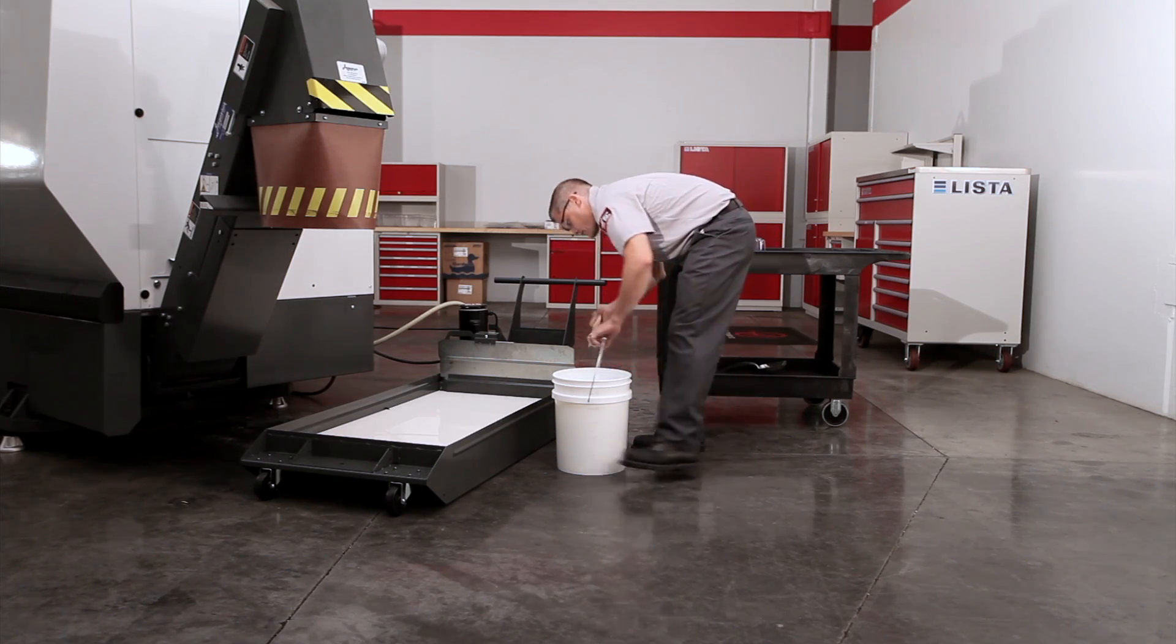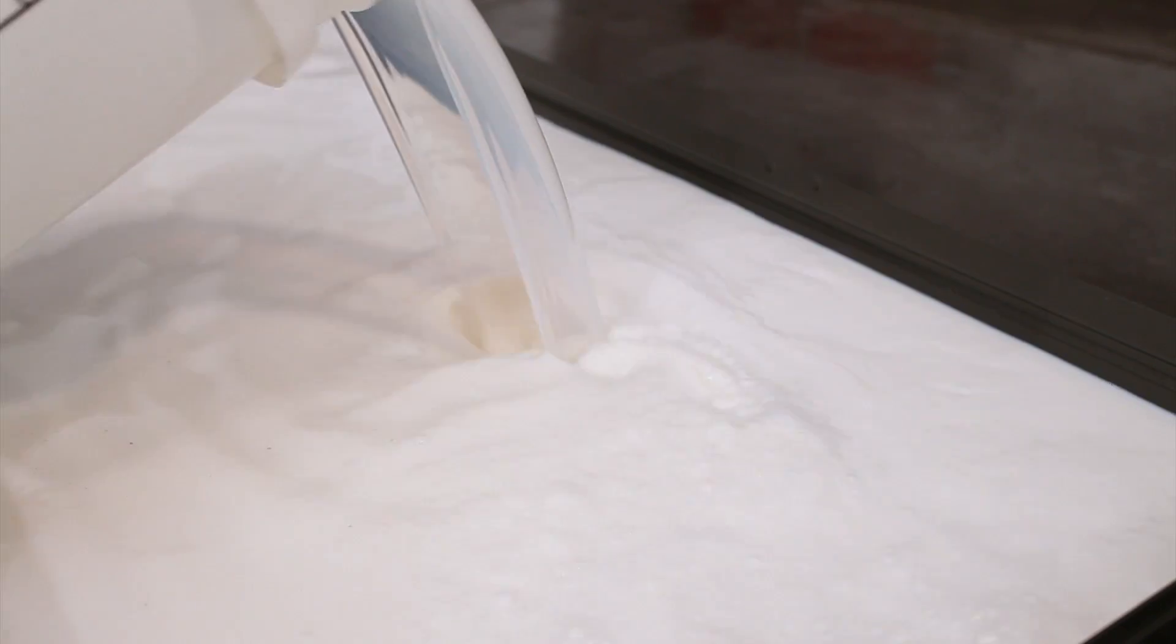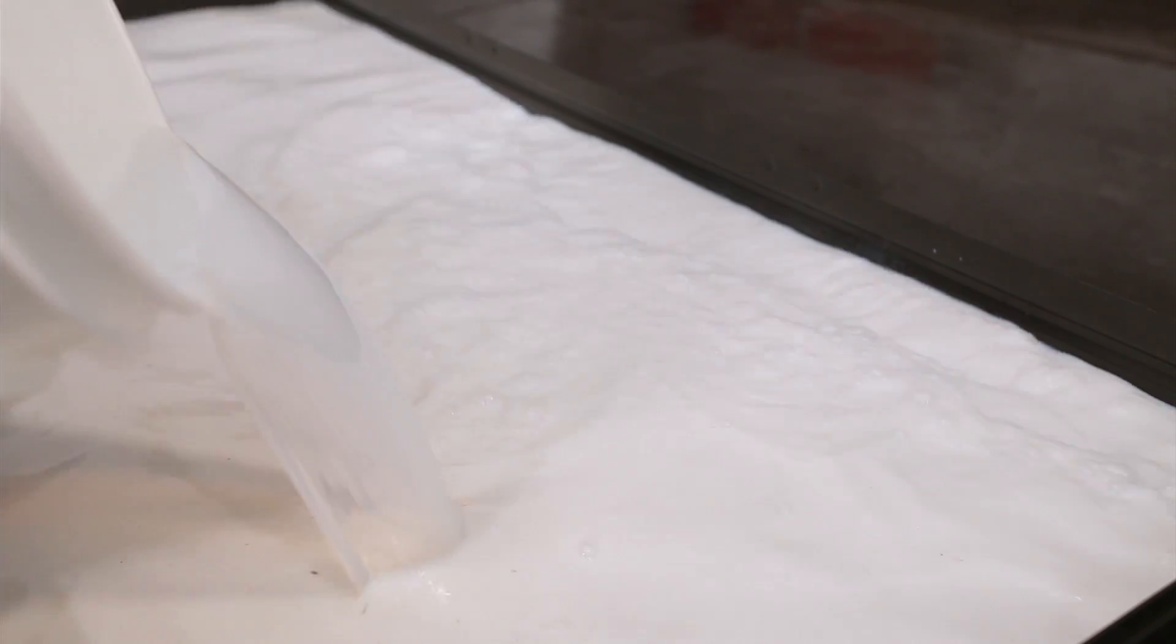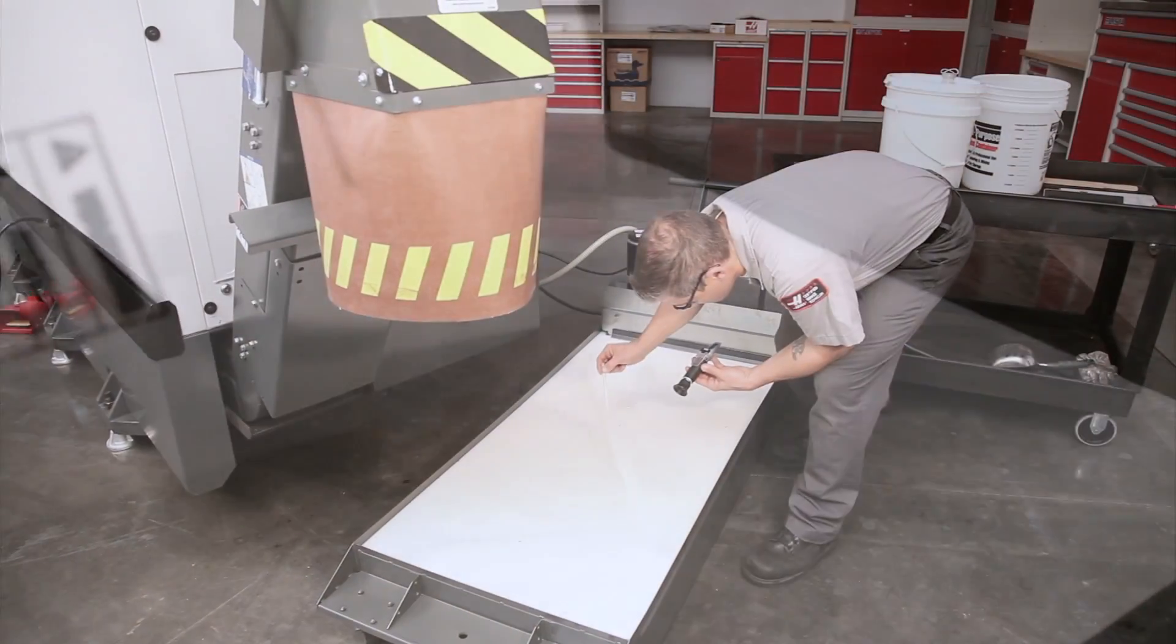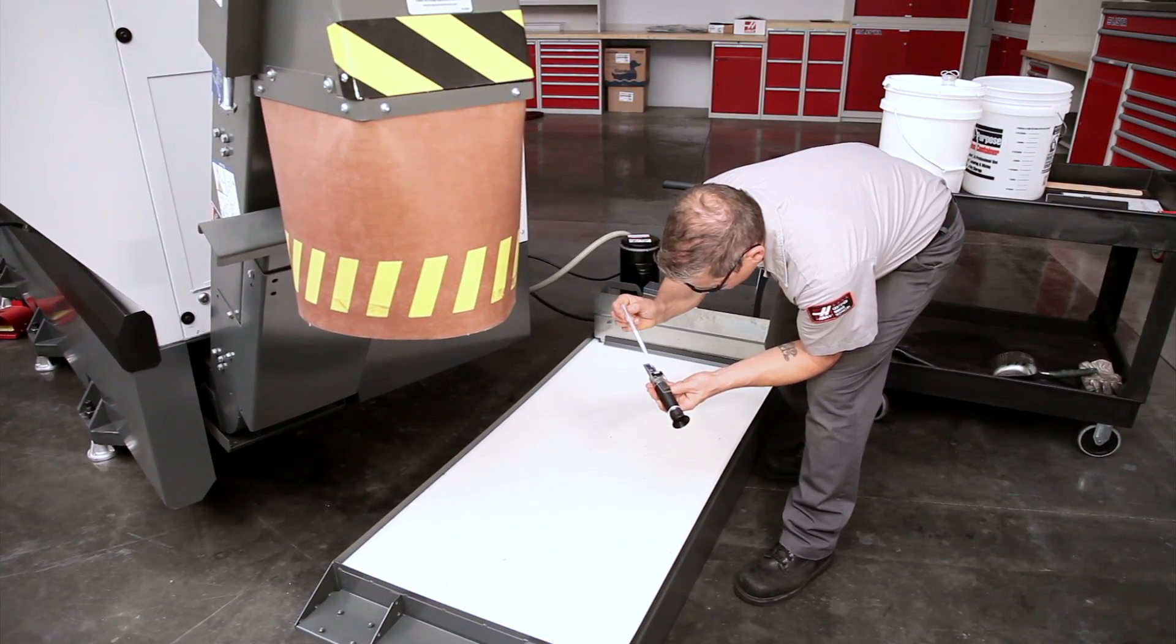To do this, we'll make one percent buckets by mixing seven ounces of concentrate into each five gallon bucket of deionized water we add to the tank. Using the one percent buckets will ensure that everything mixes uniformly as we finish filling the tank.